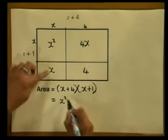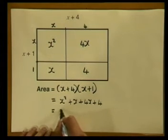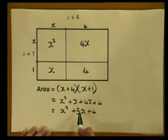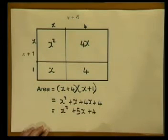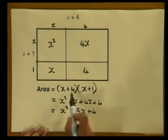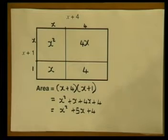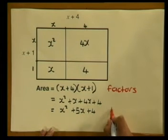Now what is the total area of the big rectangle? If we add all the areas, we get x squared plus x plus 4x plus 4. And if we add our like terms, we get x squared plus 5x plus 4. Notice that this is a trinomial. So if the sides are x plus 4 and x plus 1, then the area is x squared plus 5x plus 4. Therefore, we can call x plus 4 and x plus 1 our factors, and x squared plus 5x plus 4 is our trinomial.